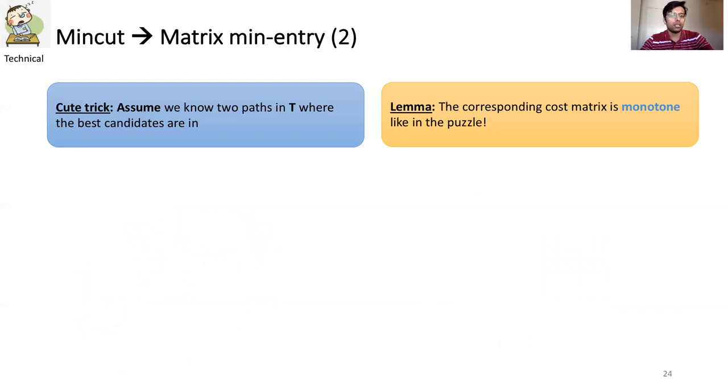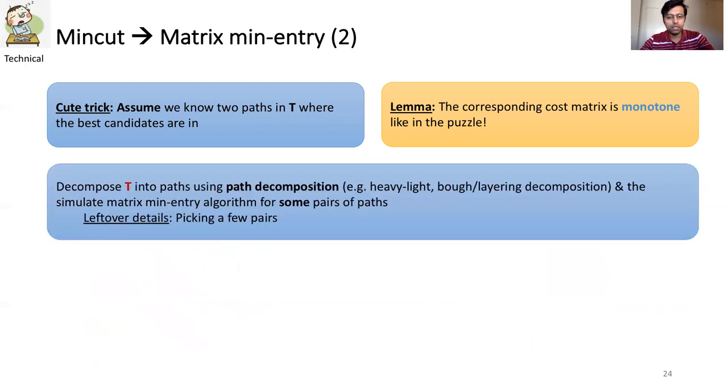Here we use tree decomposition. We can use either heavy light decomposition or bow decomposition. This will give us a bunch of disjoint paths. We will simulate the matrix min entry problem on some pairs of these paths. I will skip the details of how to pick such pairs, but in the next slide I will present a sketch of the algorithm which gives the condition for selecting such pairs. Also we use bow decomposition here. This is also known as the layering decomposition.